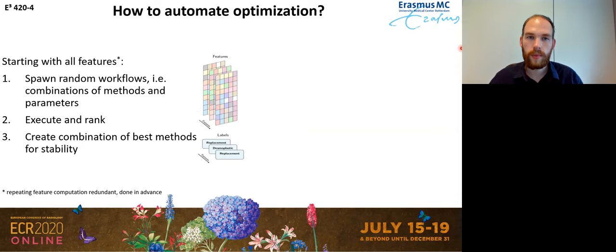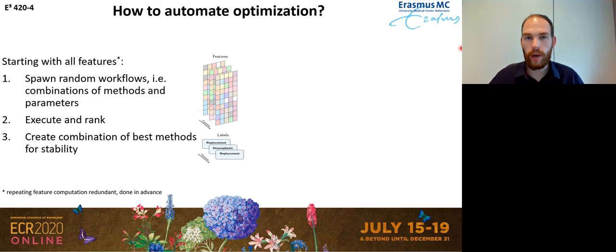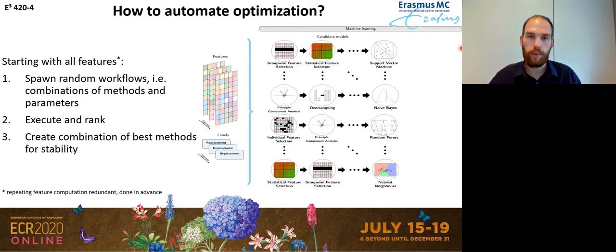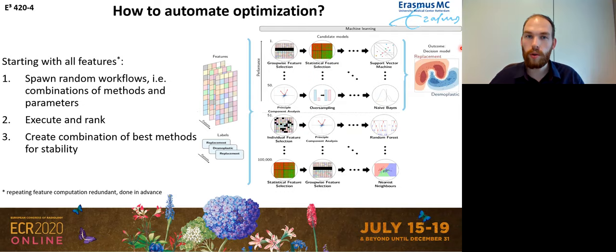So how does our platform actually automate this optimization? We start out by computing all the features, since repeatedly computing them is redundant. Then we simply spawn random workflows — each workflow being a specific combination of methods and parameters. We execute all these workflows and rank them according to their performance, for example their accuracy. We could pick the best performing workflow, but for stability it's best to average the top performing workflows — for example, averaging the best 50 workflows — and that gives us one final radiomic signature.